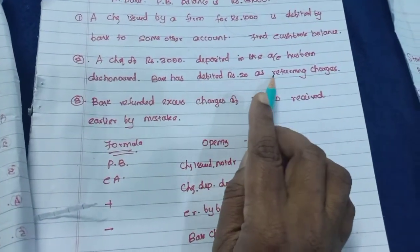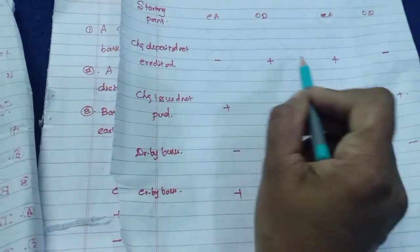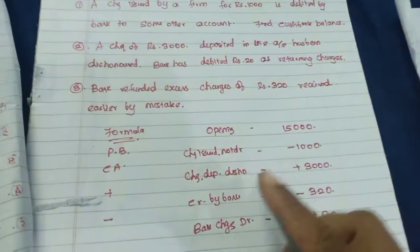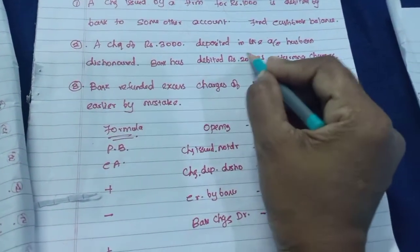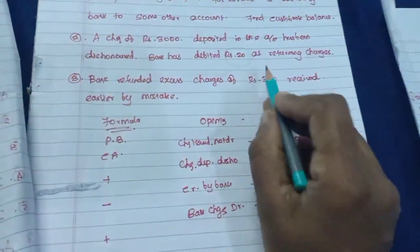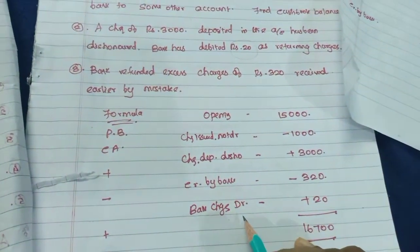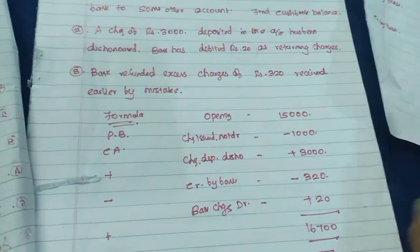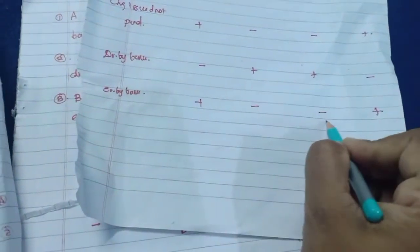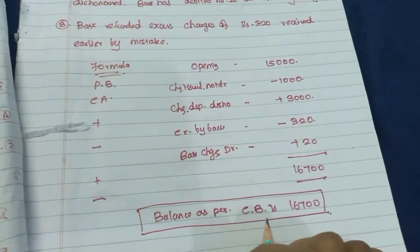Bank has debited Rs. 20 as returning charges — this is debit by bank, which is plus in the formula — so plus Rs. 20. Bank refunded excess charges of Rs. 320 received earlier by mistake — this is credit by bank, which is negative in the formula — so minus Rs. 320. Altogether, the balance as per cashbook is Rs. 16,700. The passbook current account balance was given, and we found the balance as per cashbook.